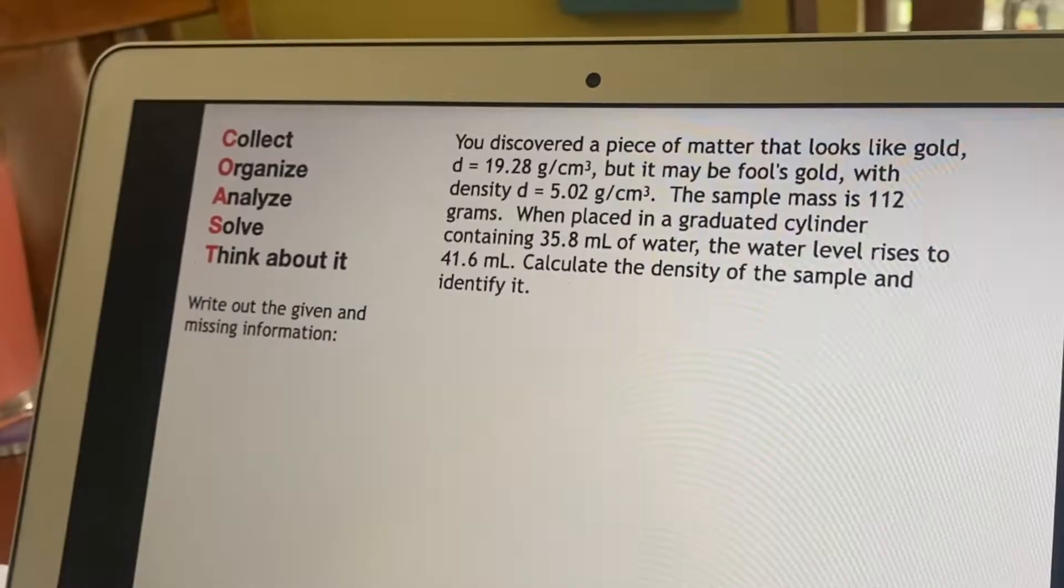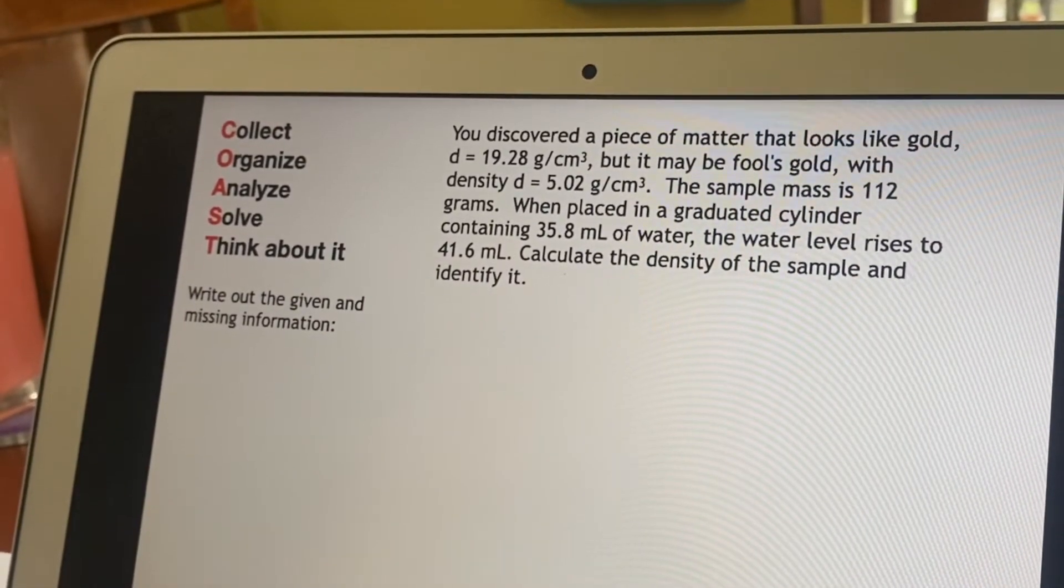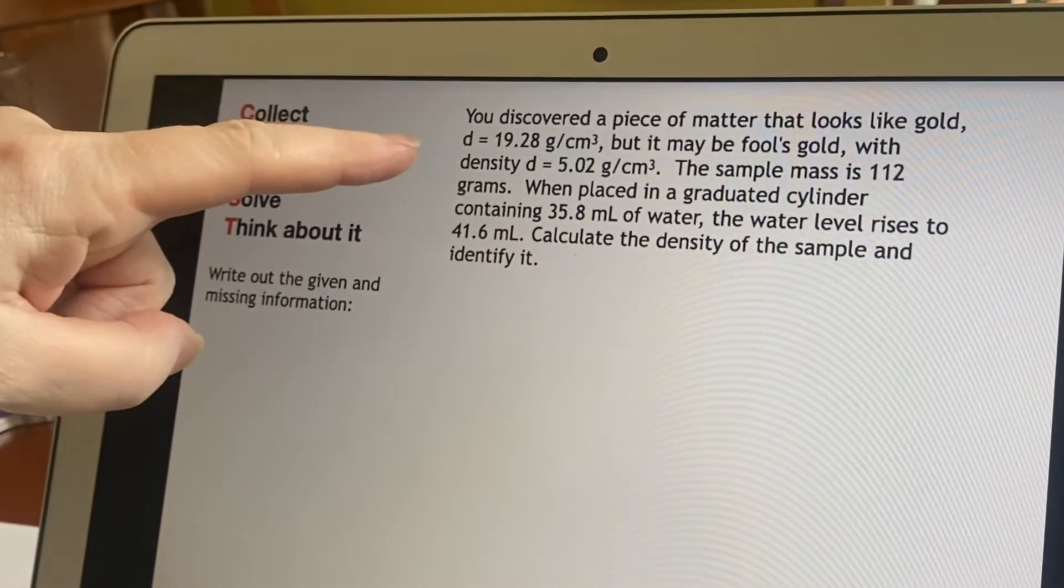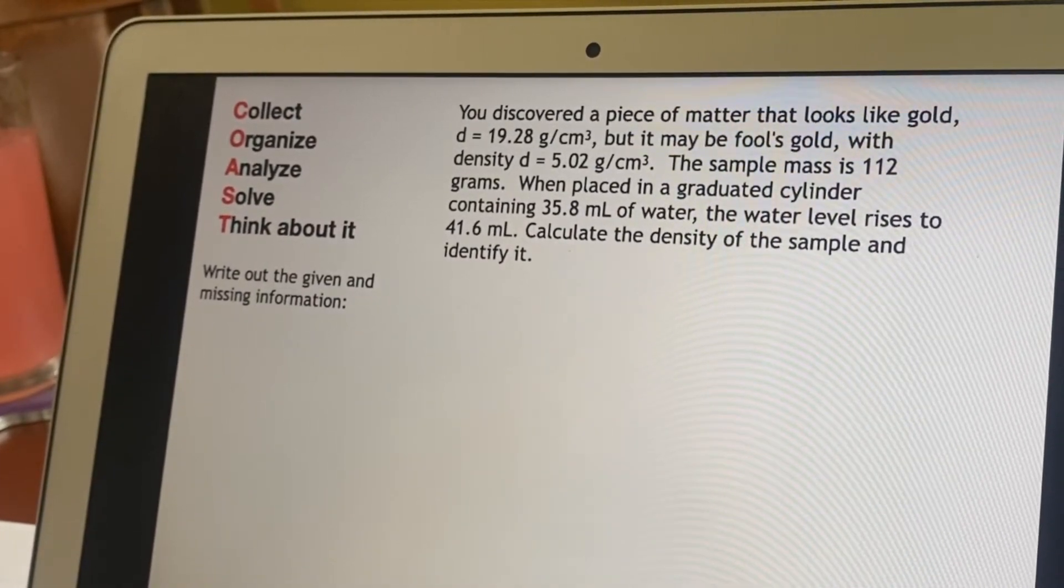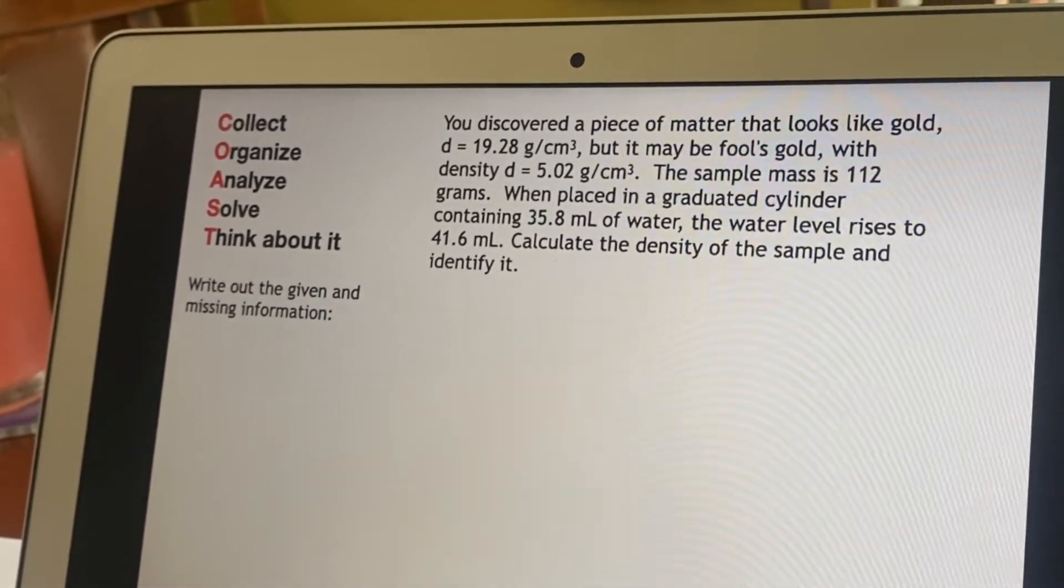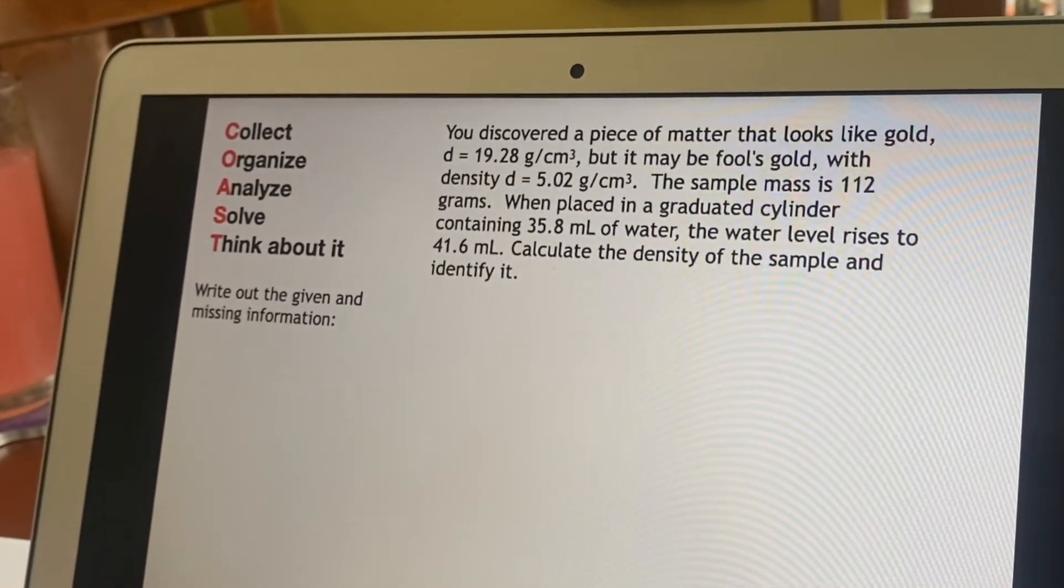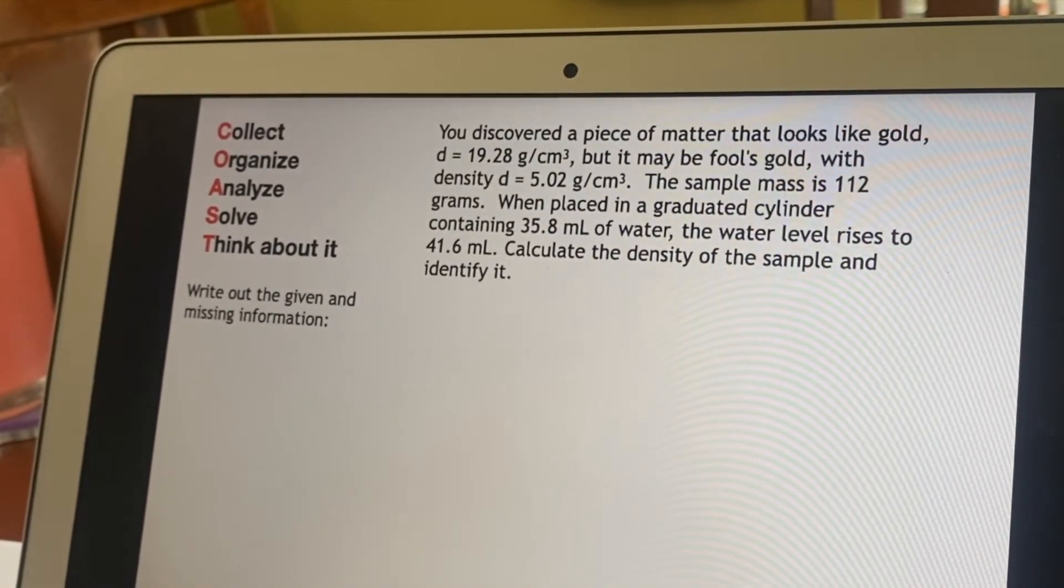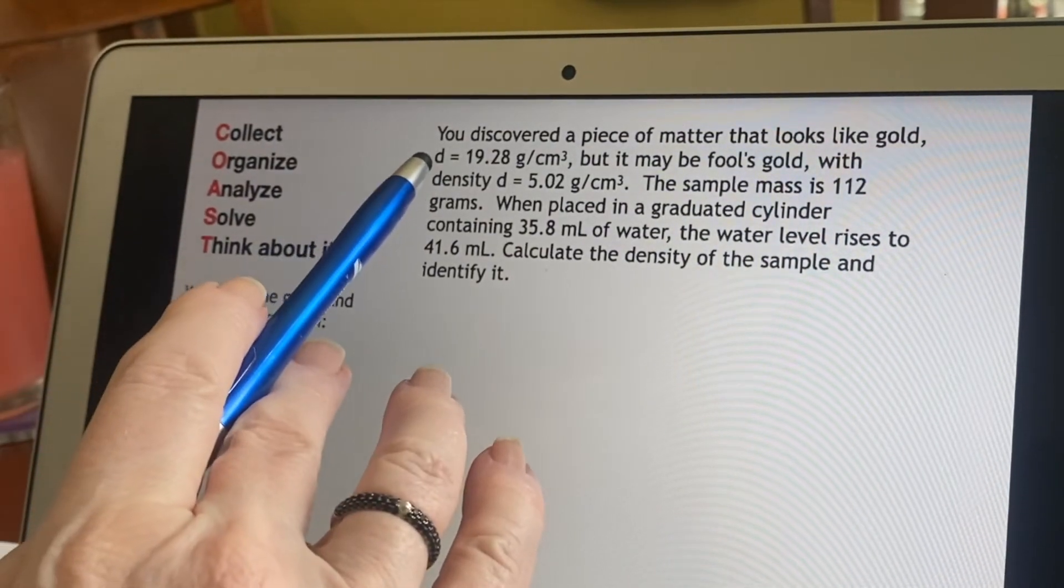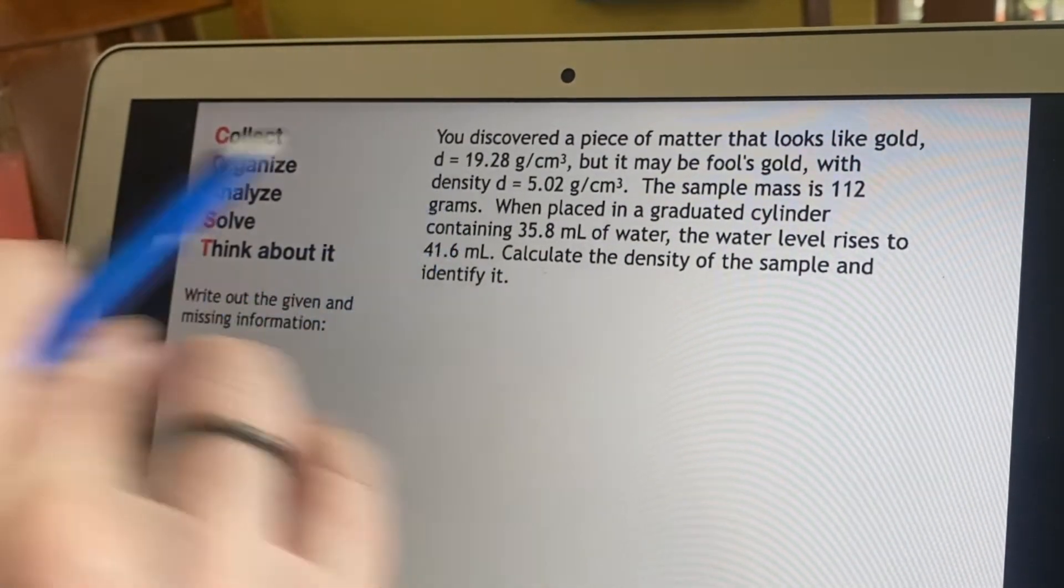So here is a particular problem. You found a golden colored piece of metal and you're hoping it's actual gold, which has a very high density. It's very heavy, but you're not sure. It could be fool's gold, which has a much lighter density. You see, this is almost four times as massive as fool's gold.